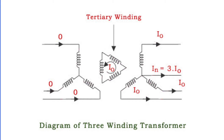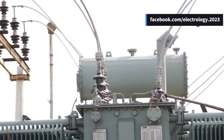In a few words, it can be said that the placement of tertiary winding in a star-star transformer considerably reduces the zero-sequence impedance of the transformer.